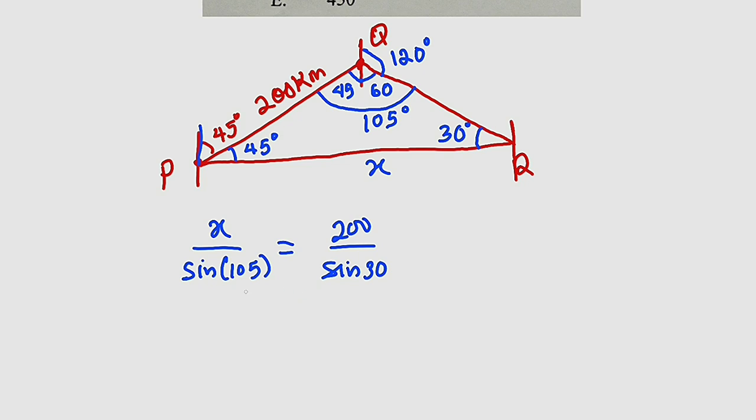And from here, we can cross multiply. We have X to be equal to 200 multiplied by sine of 105 divided by sine of 30 degrees.